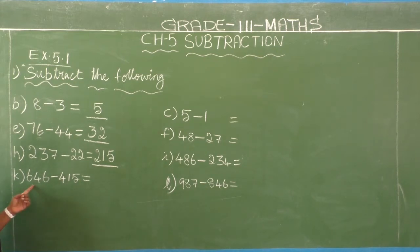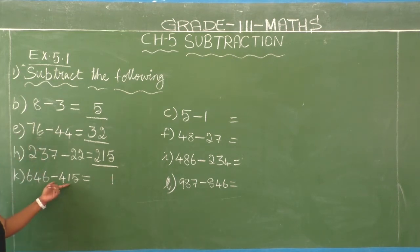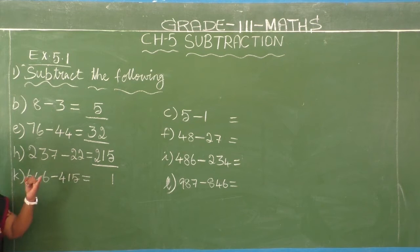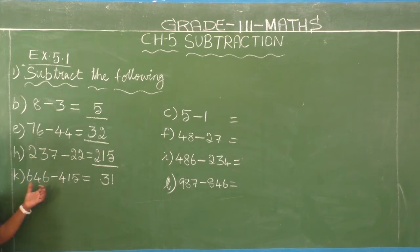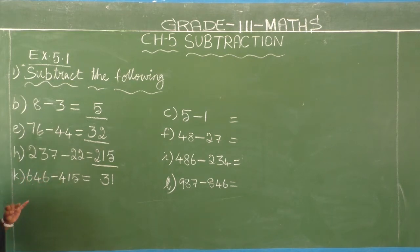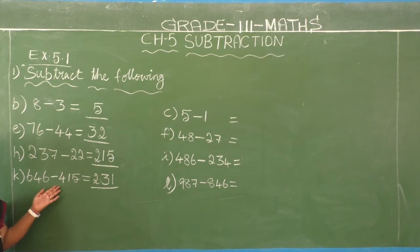Next: 646 minus 415. Ones place: second number is 5, first number is 6. 5 after 6. Difference is 1. Write 1 in ones place. Tens place: second number is 1, first number is 4. 1 after 2, 3, 4. Difference is 3. Write 3. Hundreds place: second number is 4, first number is 6. 4 after 5, 6. Difference is 2. Answer is 231. So 646 minus 415 equals 231.